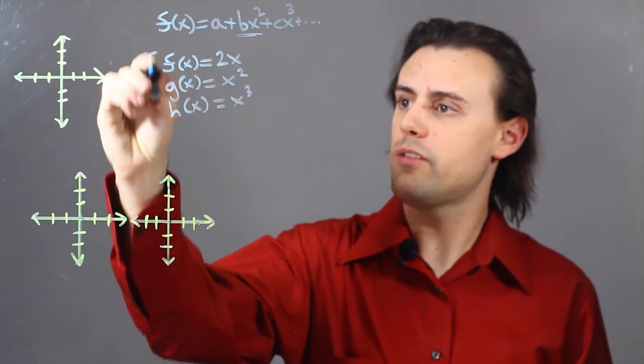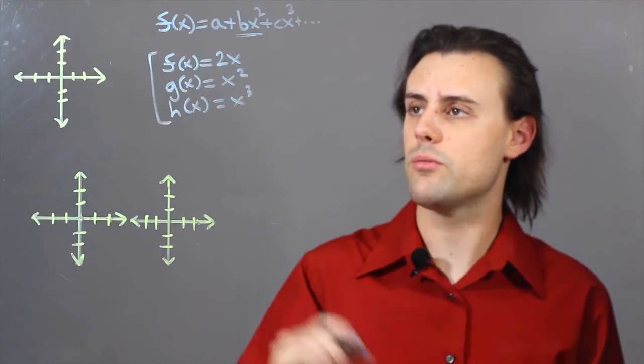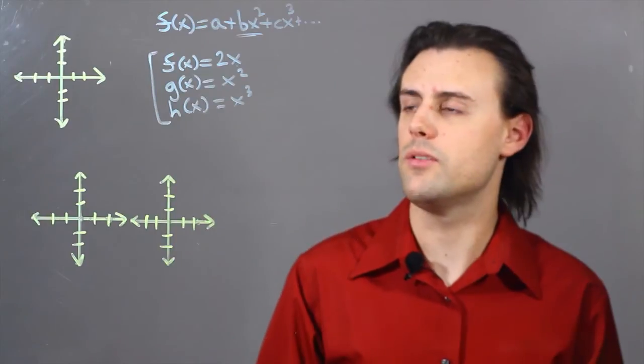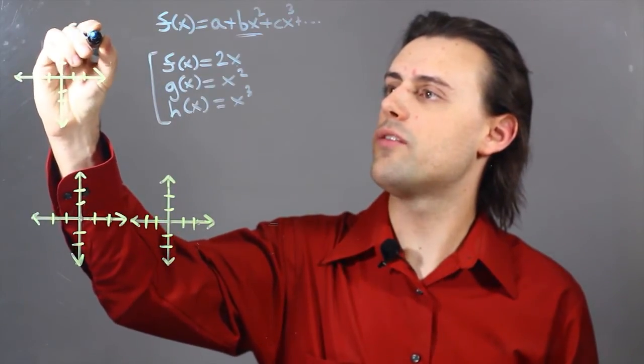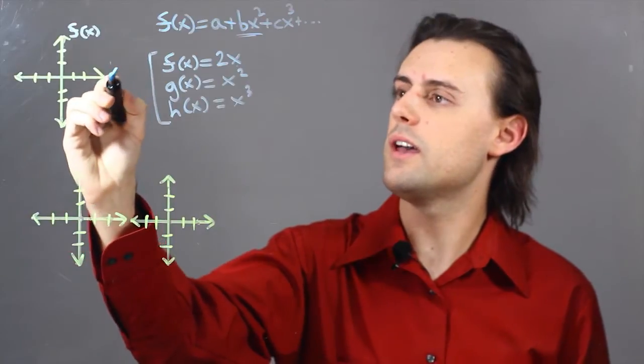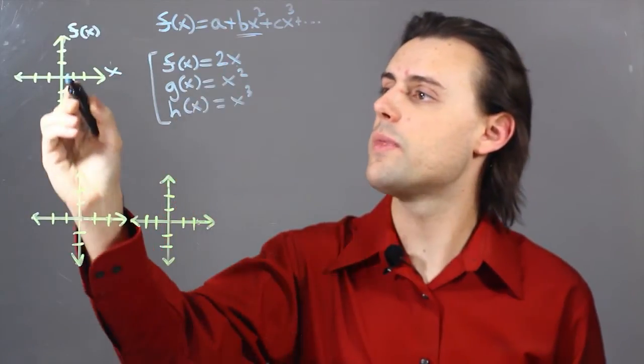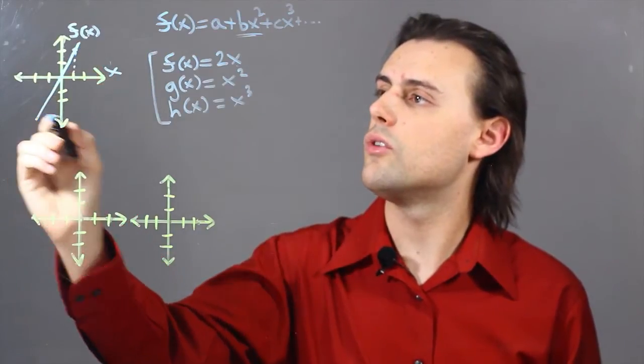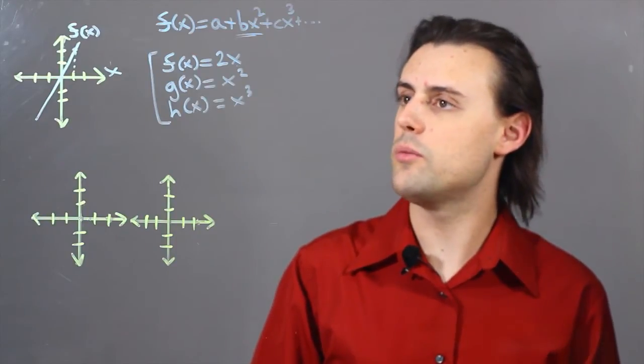So these are different examples of monomials and you can plot them if you understand the relationship between the independent variable and the dependent variable. So for example here if this is my f of x and this is x I'm going to have my slope of 2 so here is the graph of my linear monomial.